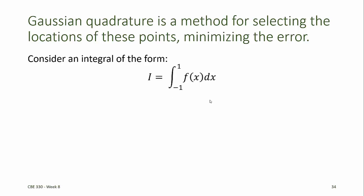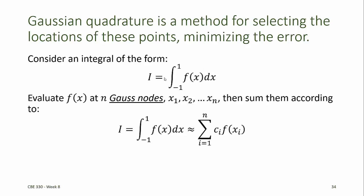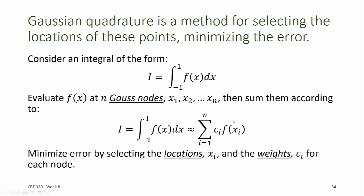Consider the problem of integrating a function f(x) over the domain from minus 1 to 1. We'll do this by evaluating f(x) at endpoints that are called the Gauss nodes, x1, x2 through xn, and then sum them according to a weighted summation.